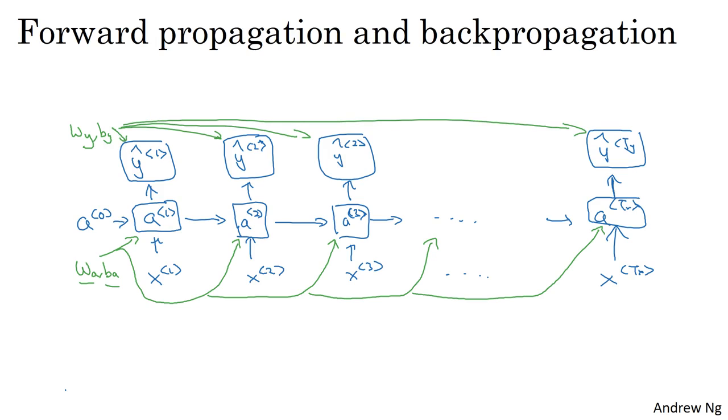Next, in order to compute backpropagation, you need a loss function. So let's define an element-wise loss first. Suppose that for a certain word in the sequence it is a person's name, so maybe yt is 1, and your neural network outputs some probability, maybe 0.1 of that particular word being a person's name. So I'm going to define this as the standard logistic regression loss, also called the cross entropy loss. This will look familiar to you from when we were previously looking at binary classification problems. So this is the loss associated with a single prediction at a single position, or the single time step t for a single word.